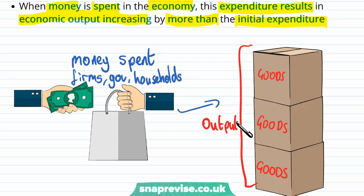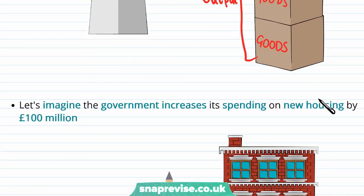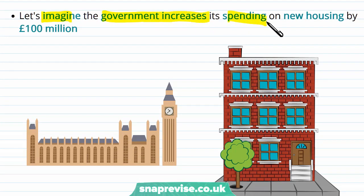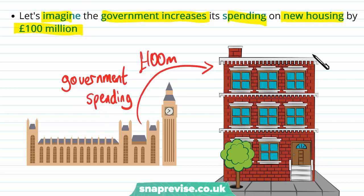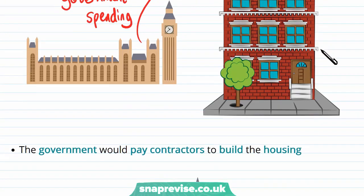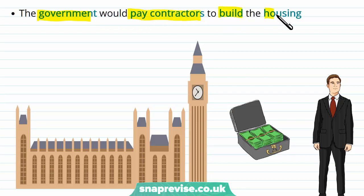We're going to expand into this and unpack it a little bit, so we're going to walk through an example. Let's imagine that the government increases its spending on new housing by 100 million pounds. This is a form of government intervention, as the government is now intervening into a market by spending within it. That 100 million pounds is going to go into new housing, so they're spending in the market to result in some kind of production. The government will pay contractors to build the new housing, and the initial injection of 100 million pounds is being paid to the contractors or the company that the contractors are part of. This causes an initial increase in aggregate demand in the economy because there is an increase in government spending, and one of the components of aggregate demand is government spending.